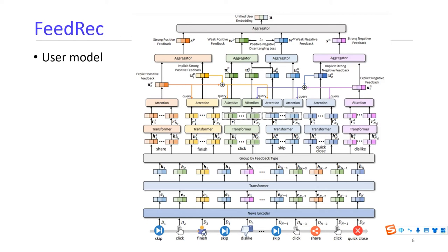We use a time network to capture the interaction between the same kinds of feedbacks, and convert the shared feedback sequence into an explicit positive feedback embedding. In a similar way, we use an attention network to learn the explicit negative feedback from the dislike sequence. These strong feedbacks help distill and guide the selection of weak feedbacks. We use the explicit positive and negative feedbacks as the attention query of the finish or click-close attention network to learn the implicit strong positive or implicit strong negative feedbacks, which are combined with explicit feedbacks to form a unified positive or negative feedback representation.